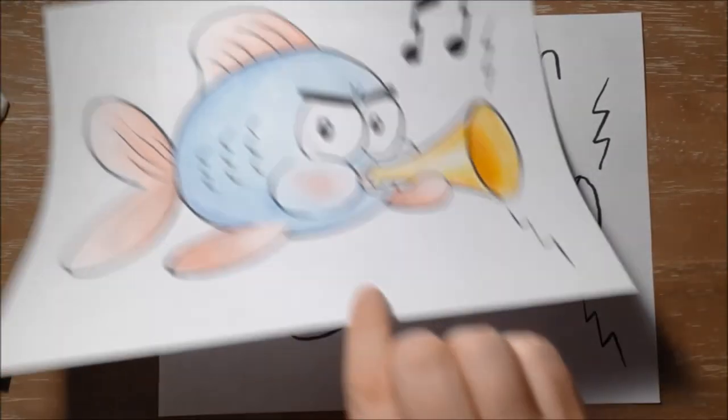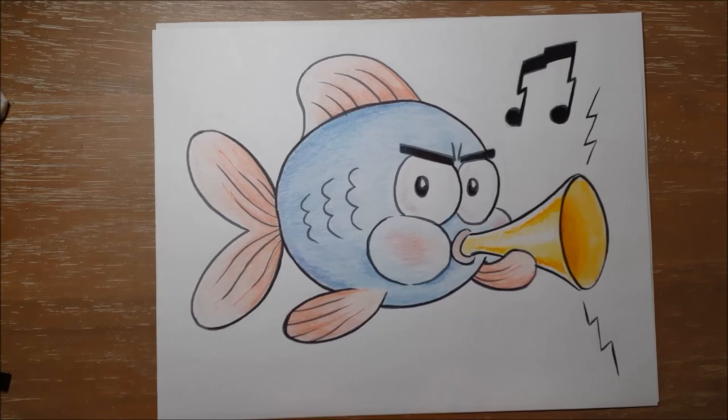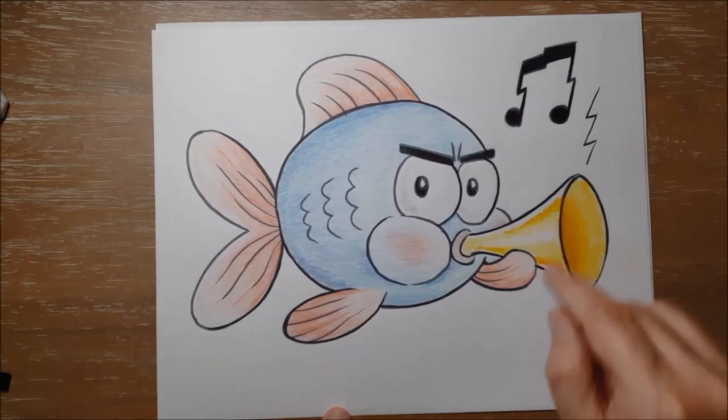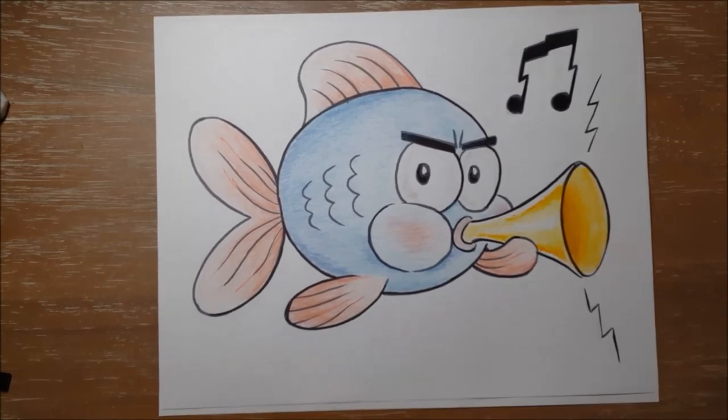So here is shush fish in color. I colored him blue for his body, pink for his fins, and yellow and orange for his horn. Thanks for coming today.